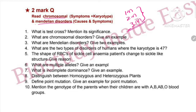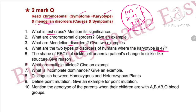For 1-mark, 2-mark, and 3-mark questions, Mendelian and chromosomal disorders can be asked at any level. Disorders are highly important. For example, chromosomal disorders — one example is karyotype 47. Videos with detailed explanations of this chapter's concepts have been uploaded, and last year's questions with answers are also provided in the description.